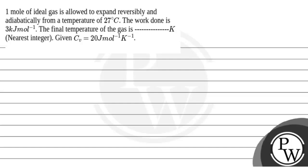Hello, let's read the question. The question says: 1 mole of ideal gas is allowed to expand reversibly and adiabatically from a temperature of 27 degrees Celsius. The work done is 3 kilojoules per mole.